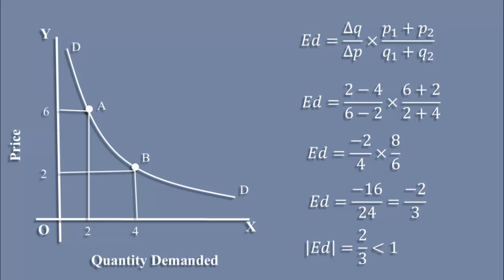Arc method is definitely an improvement over the percentage method. Whether you move from 6 rupees to 2 rupees or 2 rupees to 6 rupees, you will get the same result. That is 2 by 3.